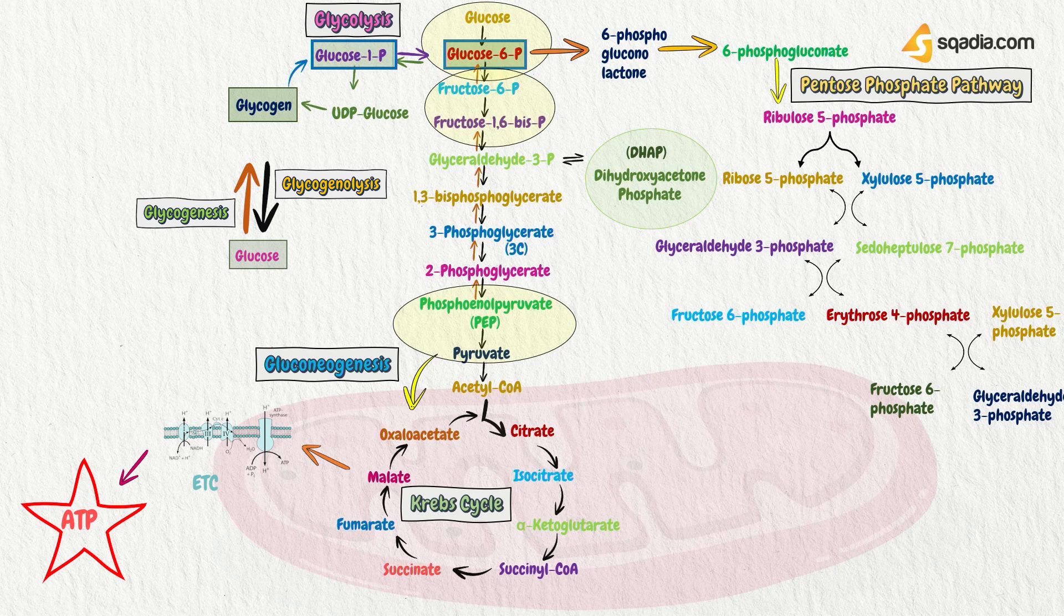So, that was all about the metabolic map. In the next section, we will be learning about the transfer of glucose from tissues to other organs.